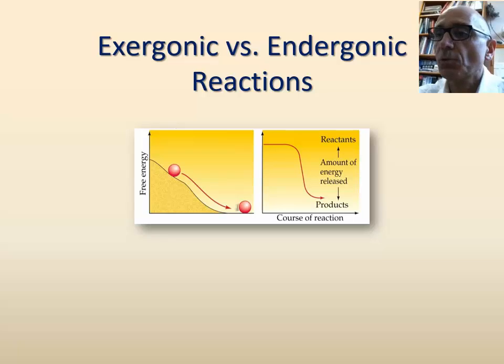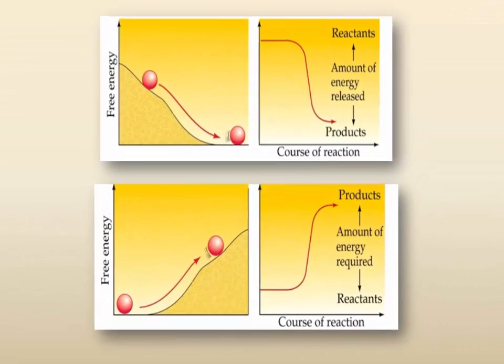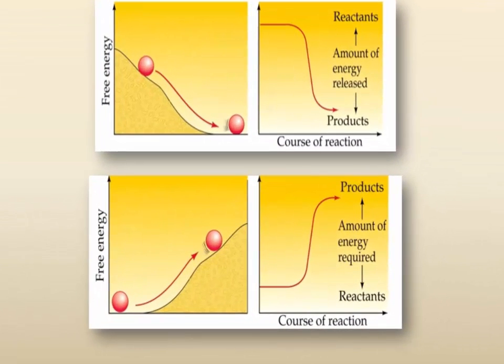Whereas the opposite is true for endergonic reactions. The movement of the ball uphill is not spontaneous, and energy is required to push the ball uphill. At the top of the hill, the ball has more potential energy than the ball at the bottom.